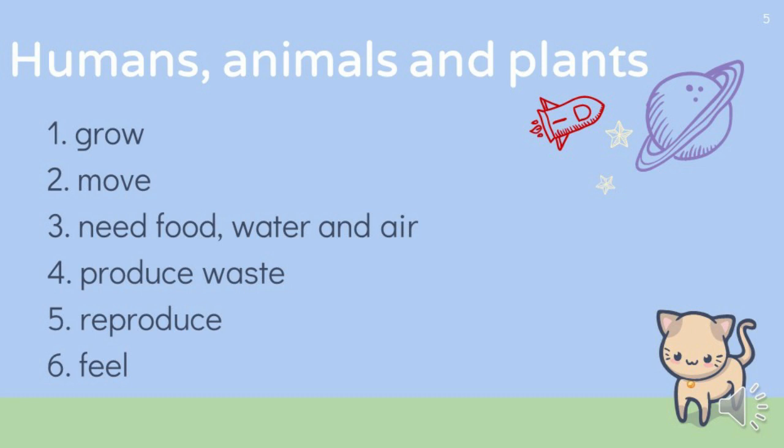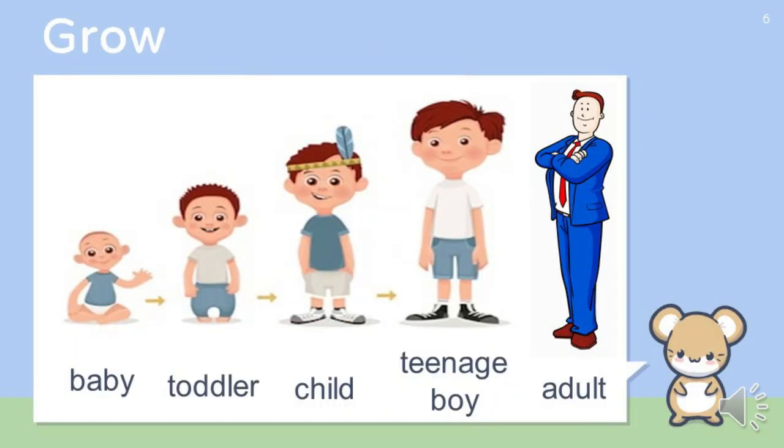Living things have the following characteristics: living things grow, move, need food, water and air, produce waste, reproduce, and living things feel.